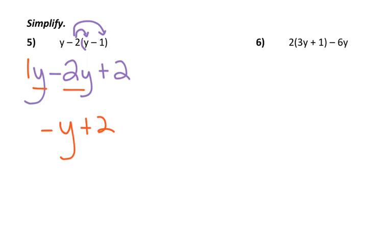Number six, I'm going to distribute. So I'm going to have 2 times 3y, and 2 times 1, minus 6y. Like terms, 6y take away 6y is gone, and I'm just left with 2.